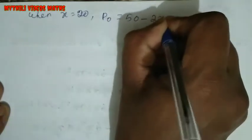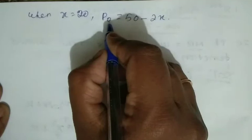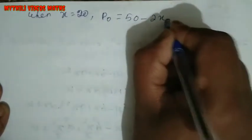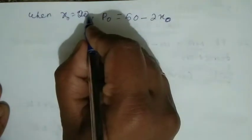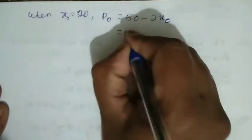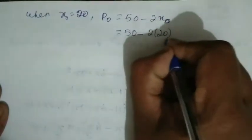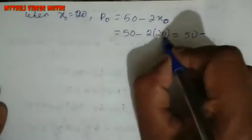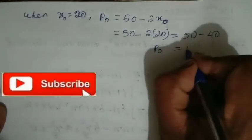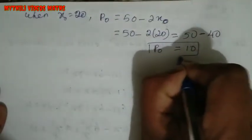When x equals 20, we find P₀. P₀ equals 50 minus 2 times 20, which equals 50 minus 40. Therefore, P₀ equals 10.